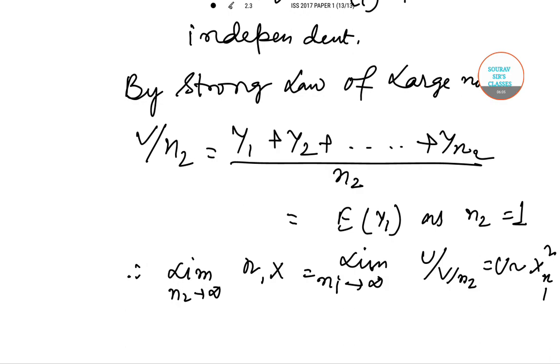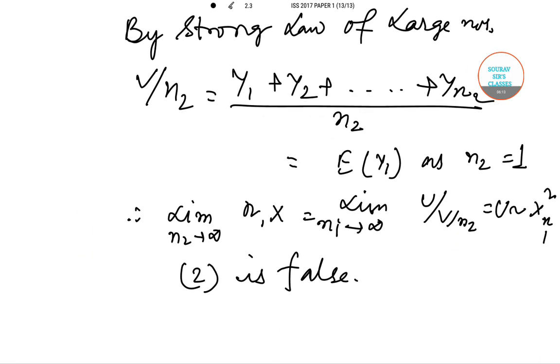Now from this we can say that consideration 2 is false. So answer C is correct, that is only 1 and 3 are true. So option C is the correct one for question number 29.